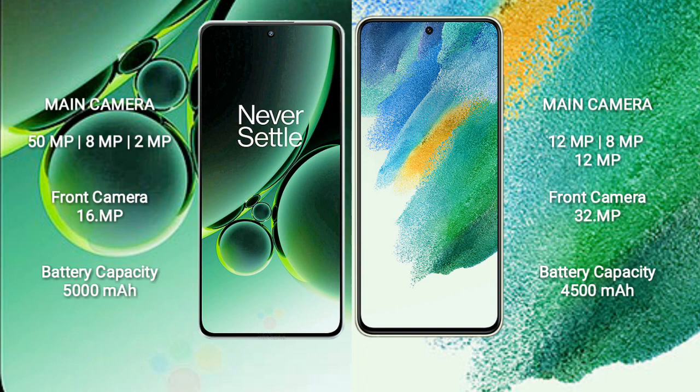OnePlus Nord 3 features a triple camera setup: 50MP + 8MP + 2MP, and a front camera of 16MP. Samsung Galaxy S21 FE features a triple camera setup: 12MP + 8MP + 12MP, and a front camera of 32MP.